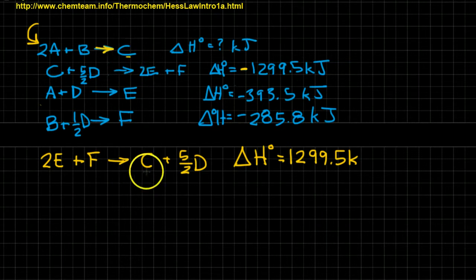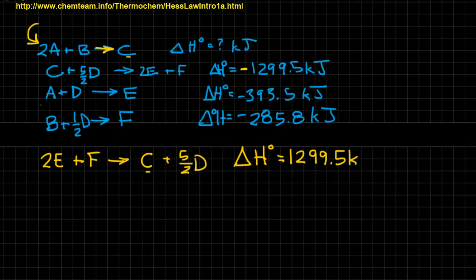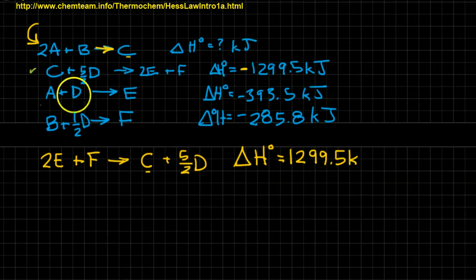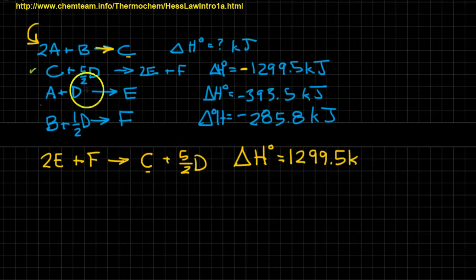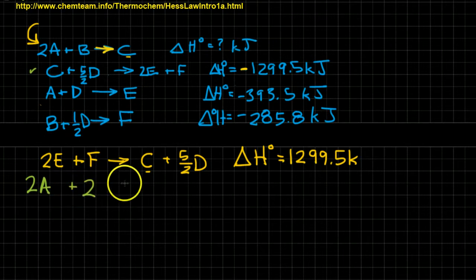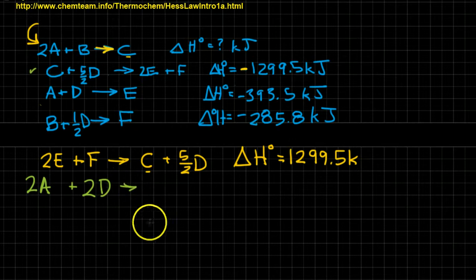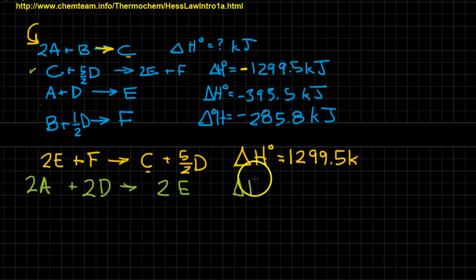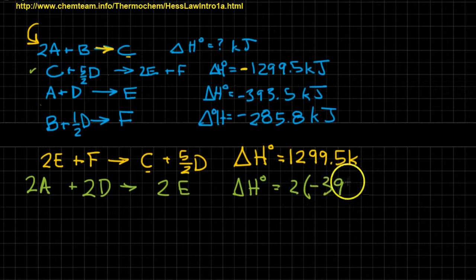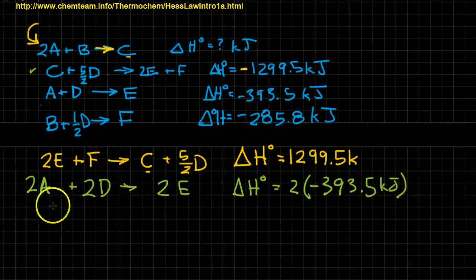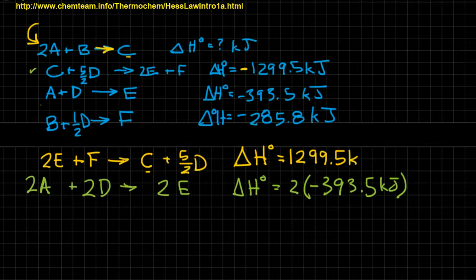These guys match. That's nice. Let's pick a new color, like a nice happy summer green. C is done. I'm just going to put a little check mark there. A, I need two of these. So I'm going to multiply two across here and rewrite the equation. Two A plus two D yields two E. And that's going to be 2 times 393.5 kilojoules. I will multiply those out, add them all together later, because procrastination sometimes, it's all right.